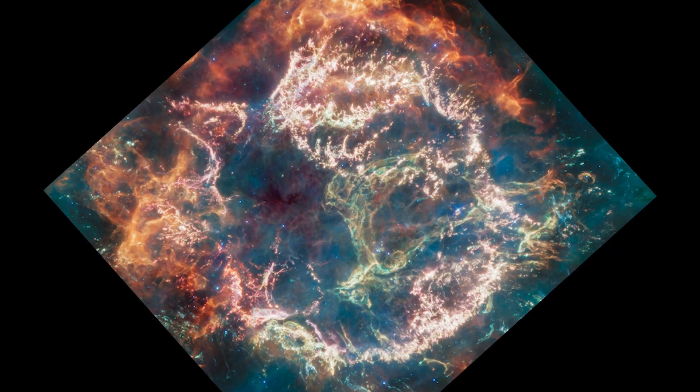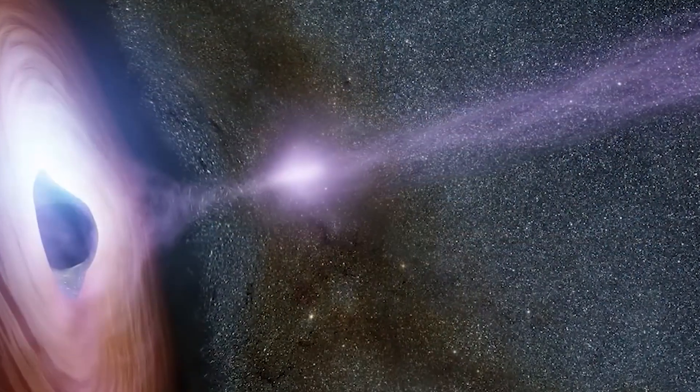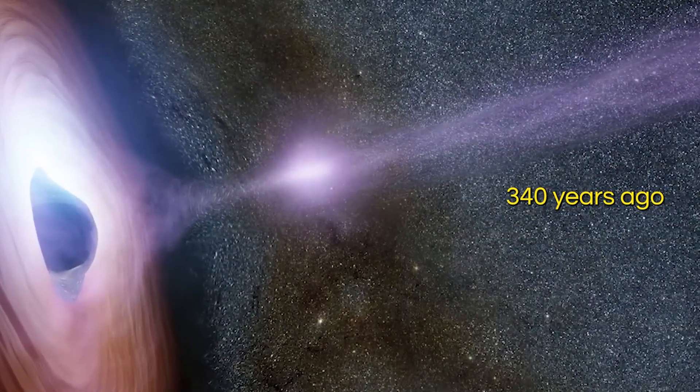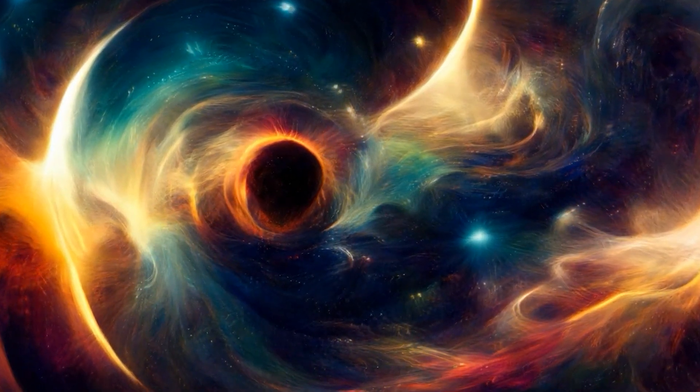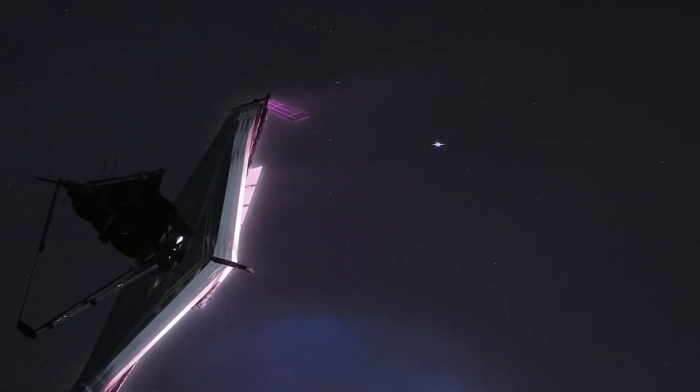Cassiopeia A, or Cass A, is the result of a stellar explosion that occurred 340 years ago. This remnant is the youngest known of its kind in the galaxy, and it is now being studied in great detail thanks to the JWST.